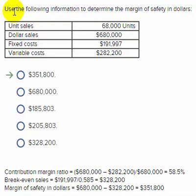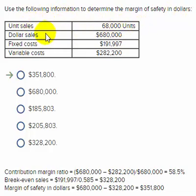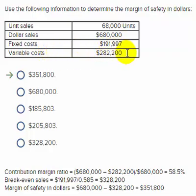Use the following to determine the margin of safety in dollars. They give us unit sales of 68,000 units, dollar sales of $680,000, fixed cost of $191,997, and variable cost of $282,200.